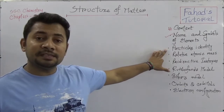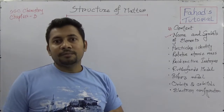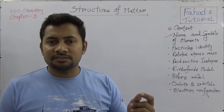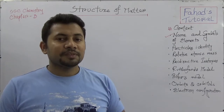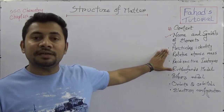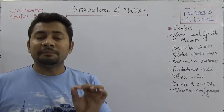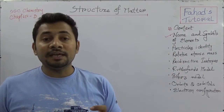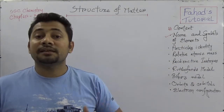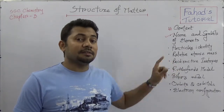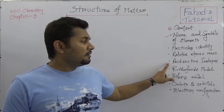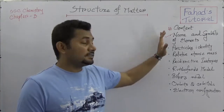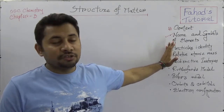The second class will cover particles identity. Inside the atom we have electrons, protons and neutrons, and there are some other particles like mesons, positrons, gravitons, neutrinos and anti-neutrinos. We also need to understand relative atomic mass, and concepts from scales like the hydrogen scale, oxygen scale and carbon scale. According to the carbon scale we consider the relative atomic mass of elements, as well as radioactive isotopes, isotones and isobars.